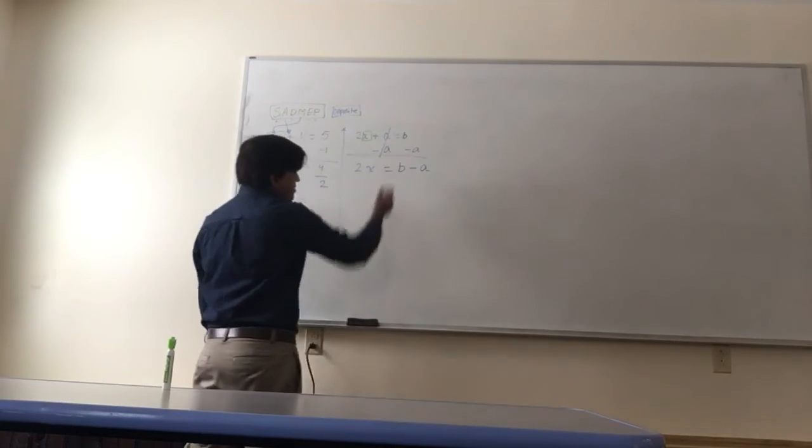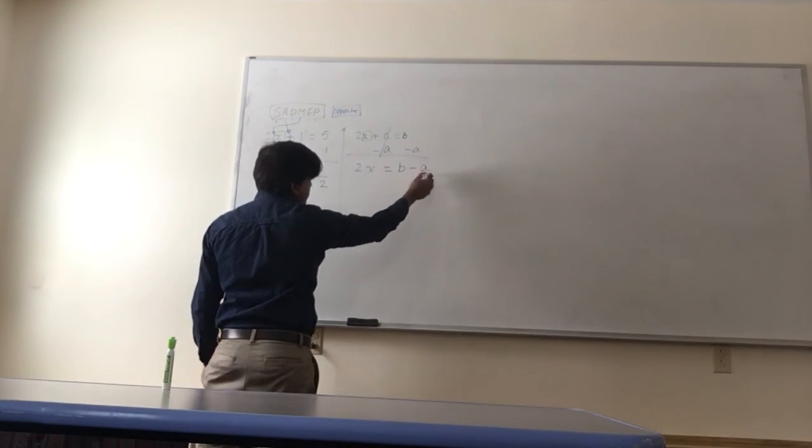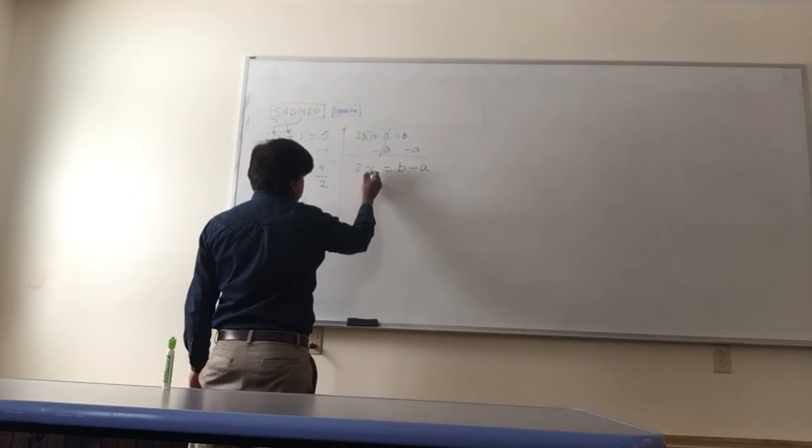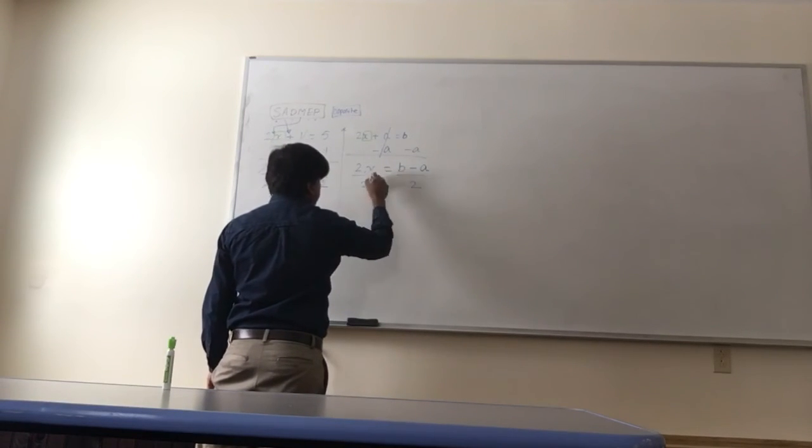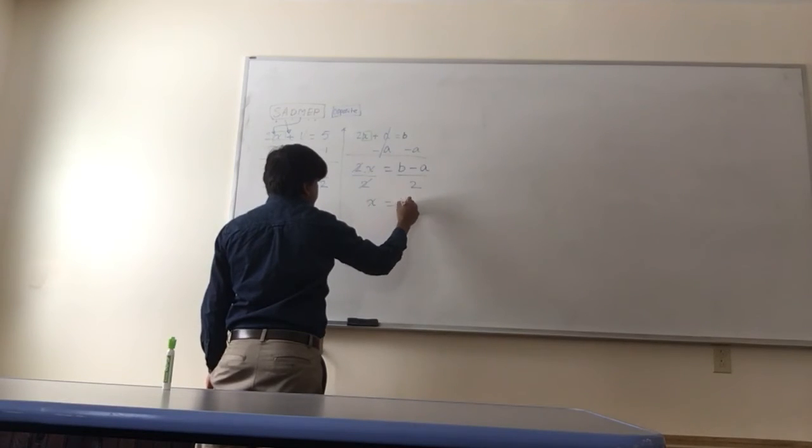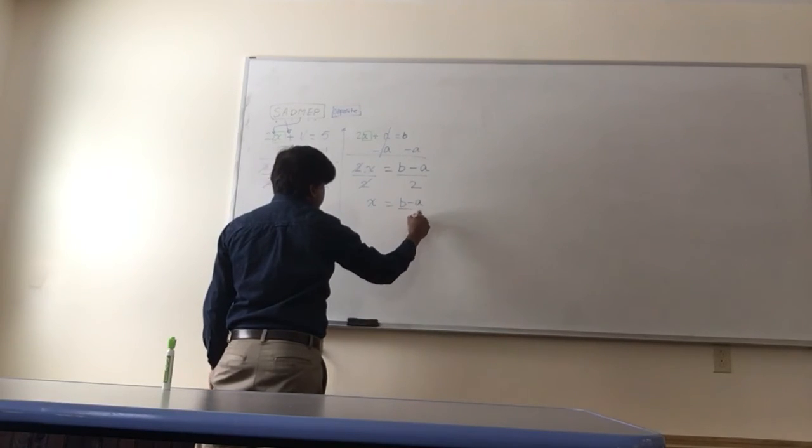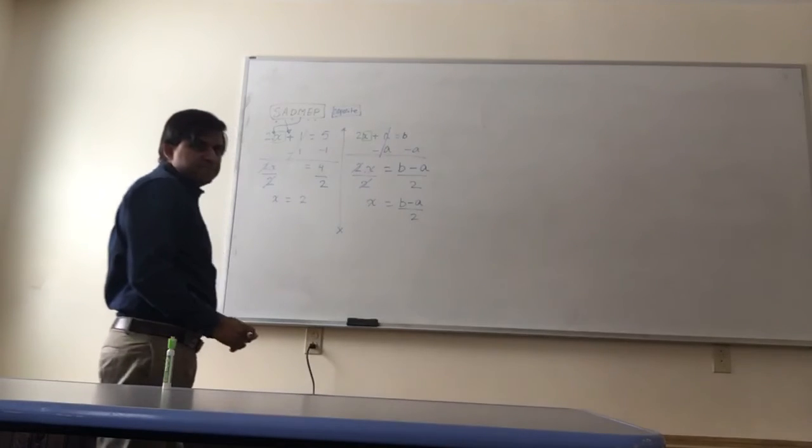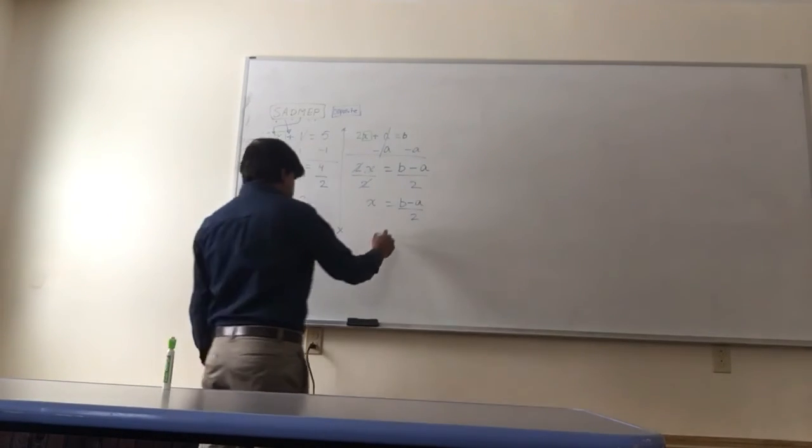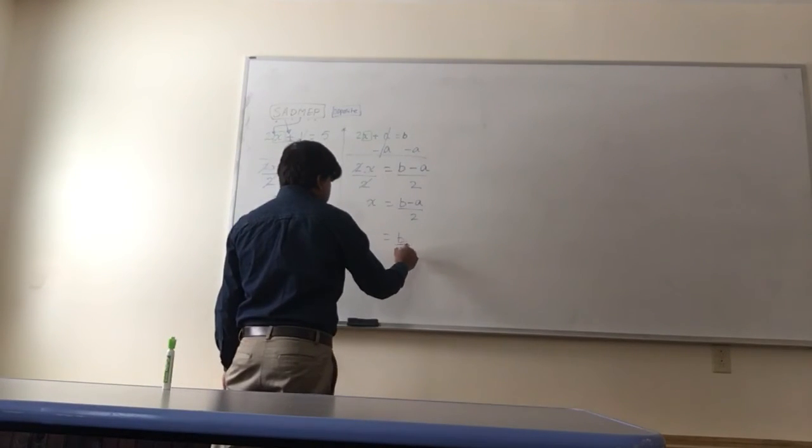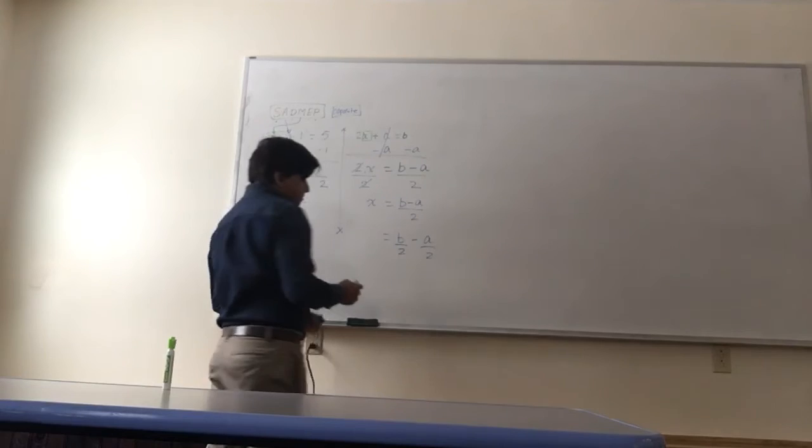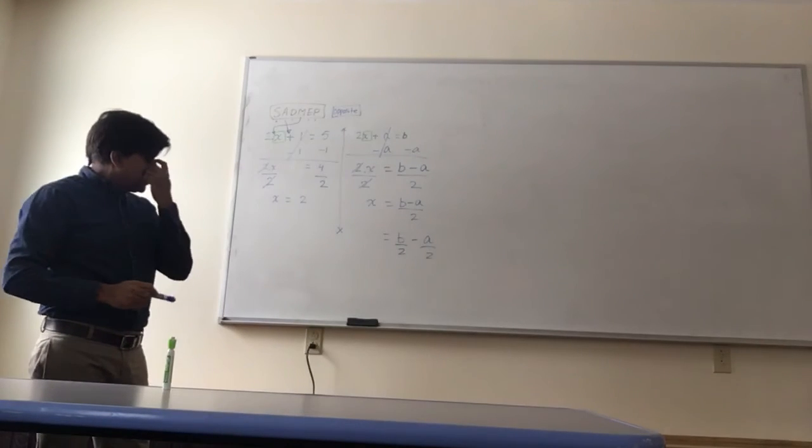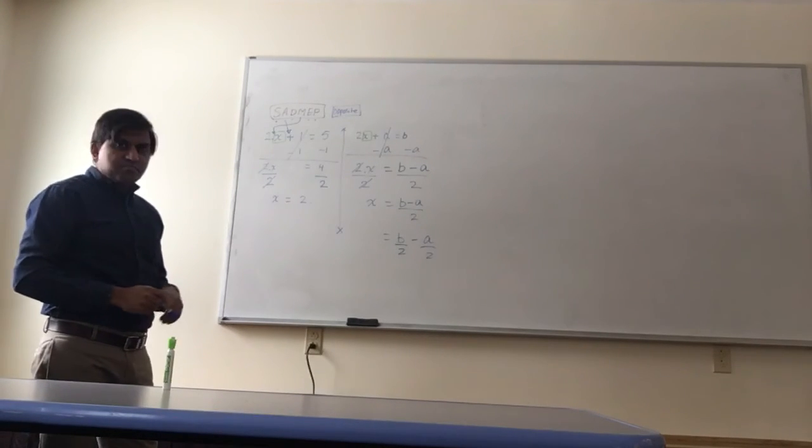Do I get b minus a when I'm doing this? I cannot subtract these, so divide 2 on both sides. What do you get? x is equal to b minus a. That's your answer. Or you could write it the other way: b over 2 minus a over 2. You get these.